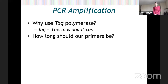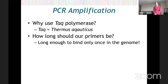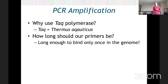Primers need to be long enough to bind only once in the genome. If our primers are sticking all over the place, the polymerase is going to bind all over the place and make lots of different copies. We're not going to end up with just one nice barcode region — that little target region in our animation. So we want our primers to only bind once in the genome and near each other so that we can make copies of just that section.